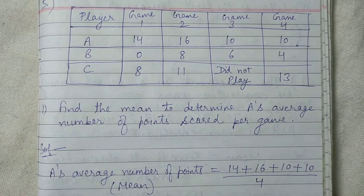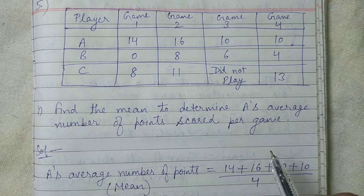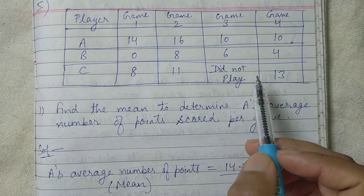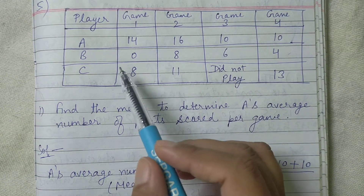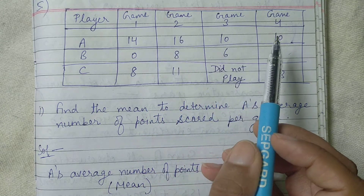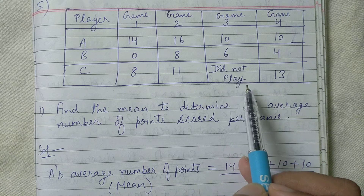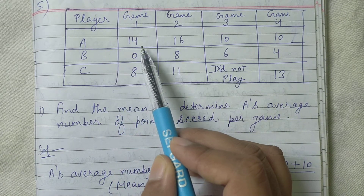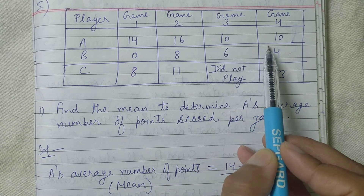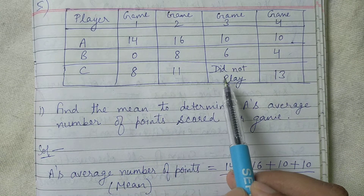One more question we will solve related to the mean, so that it will give you a clear idea. A table is given with three players A, B, and C playing in four games — game one, game two, game three, and game four. Their points for each game are given. Player A gets fourteen points in game one, two points in game two, ten points in game three, and ten points in game four. C did not play in game three.